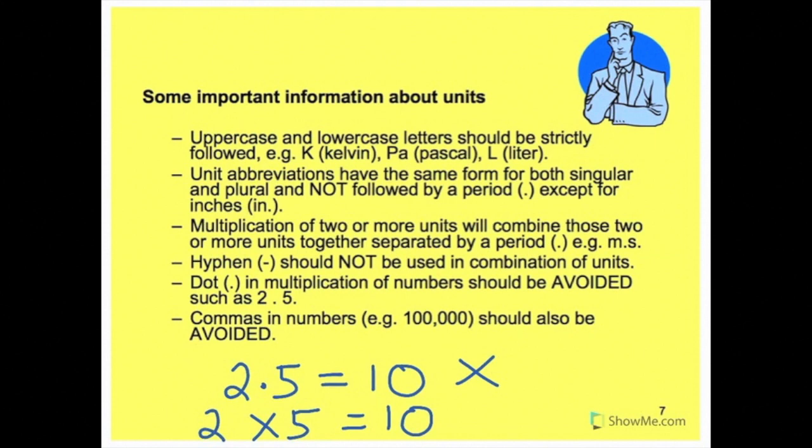The last point, commas in numbers. For example, 100,000 should also be avoided. We should not write commas in these numbers, at least for this course, just to avoid confusion when reading large numbers. So that is it for this video and I will see you in the next video. Thank you.